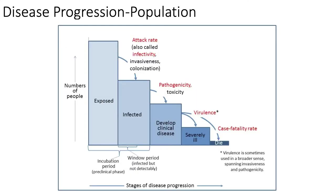We can also look at disease progression in a population. Say you go to a dinner party with 100 people and one of those people has measles — all 100 were potentially exposed. How many people actually got infected? That's called the attack rate, or how infectious is this virus. It depends on the virus or bacteria, but we're just going to focus on viruses today.